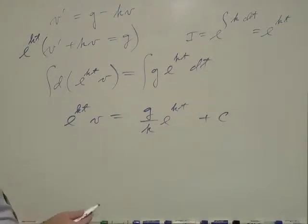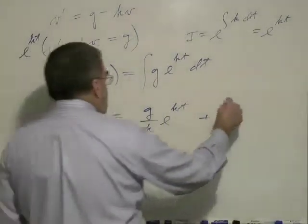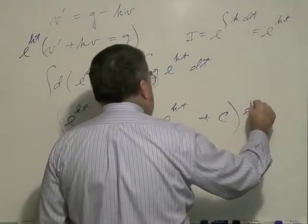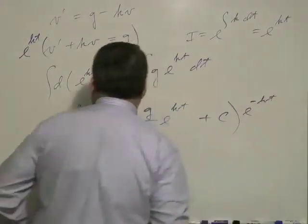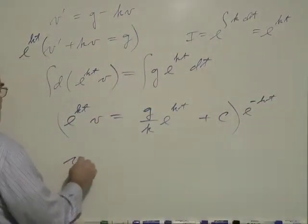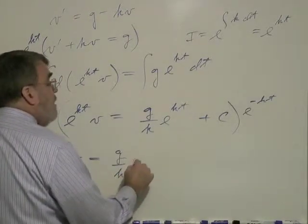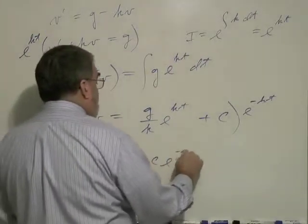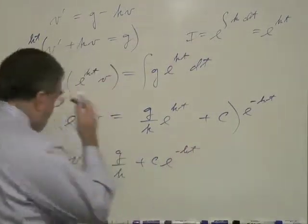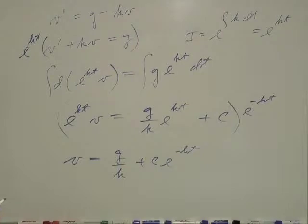So we can solve for velocity, multiply by e to the negative kt. And so we have v is equal to g over k plus c e to the minus kt. So there we go. There's the velocity.